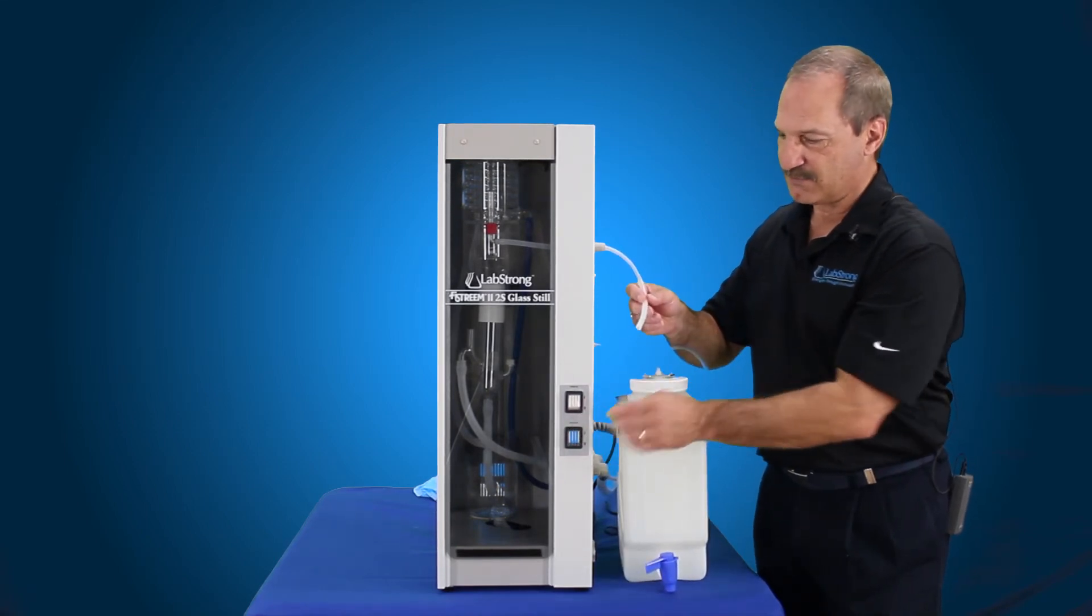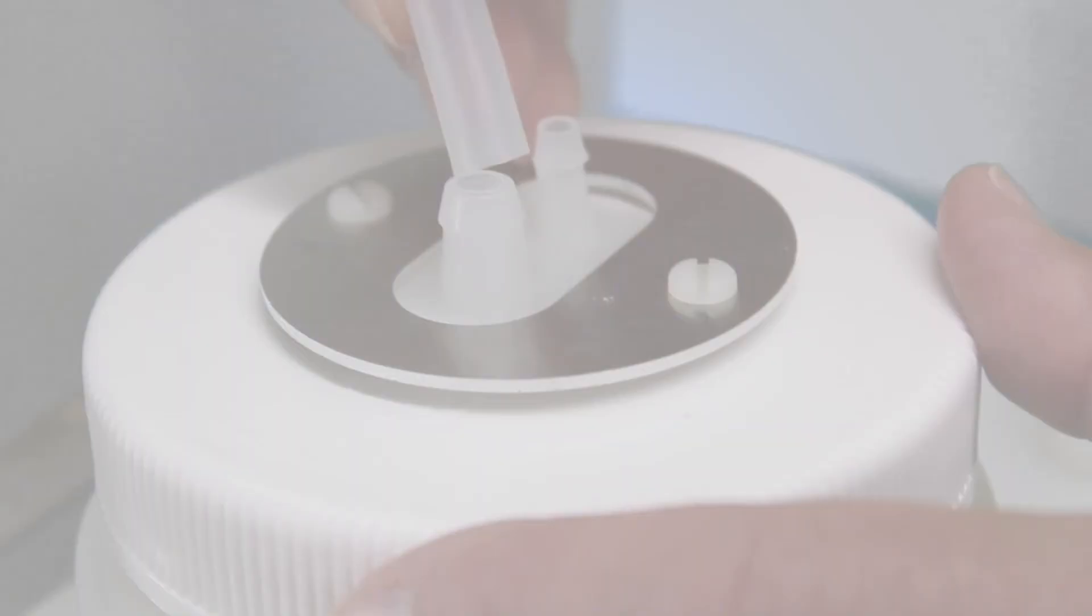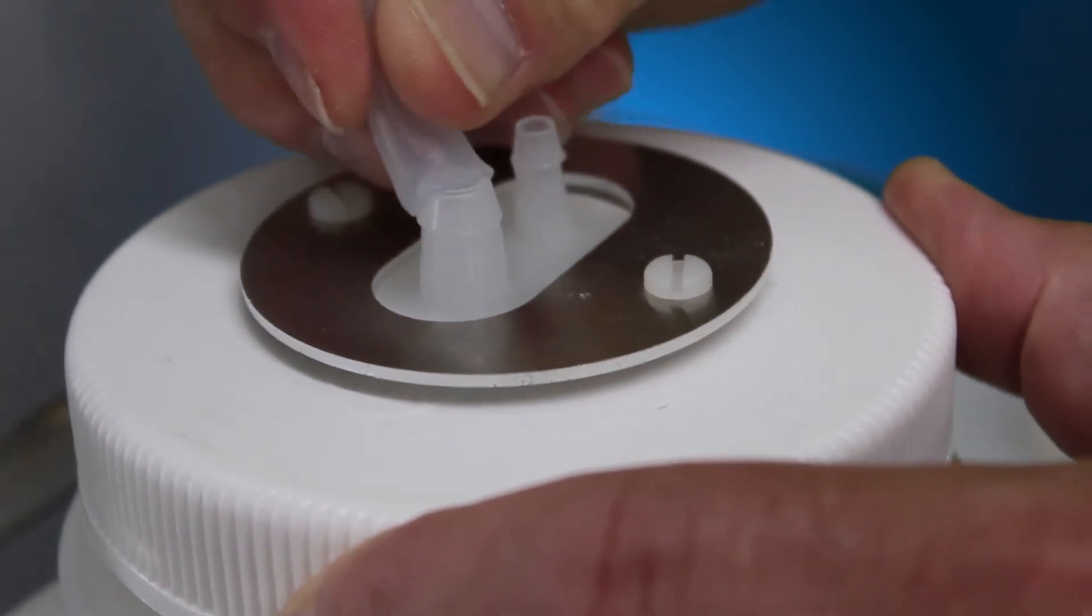But first you want to shut this all off so you stop water coming through here and let this cool down for a little bit because it's going to be pretty hot. Then you want to reconnect it up to your tank after you've run that four or five liters to drain.